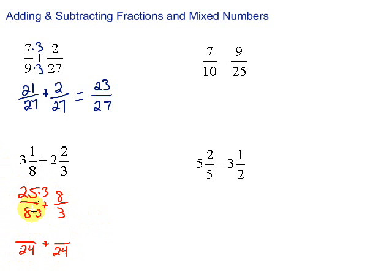Then on the other side we have, well let's do this first. 8 times 3 is 24. 25 times 3 is 75. Then we have on this side we have to multiply 3 by 8 to get 24. So we multiply by 8 on top as well. 8 times 8 is 64.